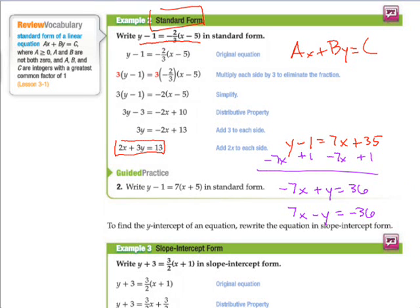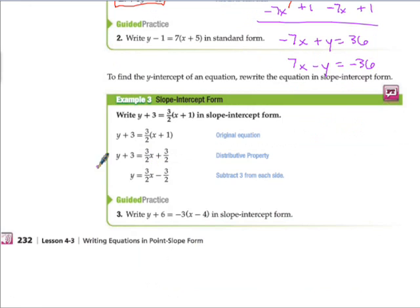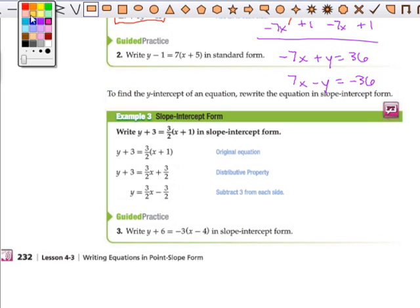Now we can also move from point-slope form to slope-intercept really easy, and that one actually is two steps: distribute and then either add or subtract. So we distribute the three-halves to both of those numbers, we subtract 3, and that's all there is to it.